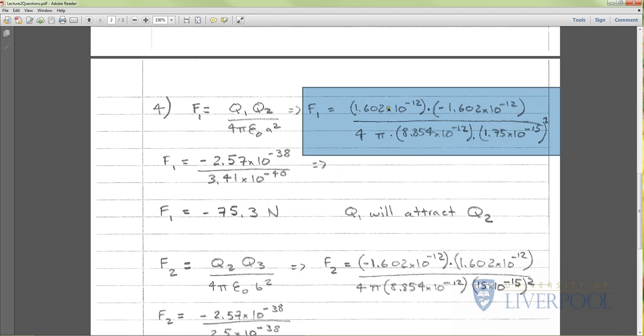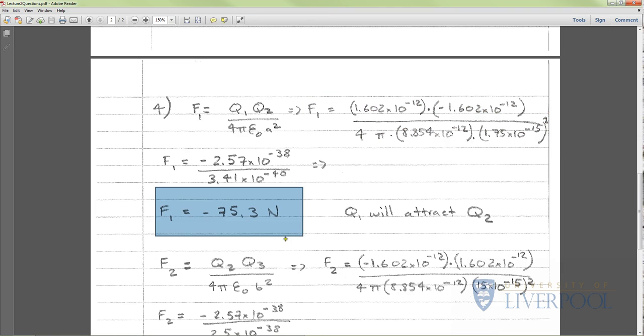Once you do that, you'll get a value for the force. Note: because we've got a negative sign up here, it's going to be a negative force. Force one is minus 75.3 Newtons, so q1 is attracting q2 and q2 will experience a force of 75.3 Newtons towards q1.